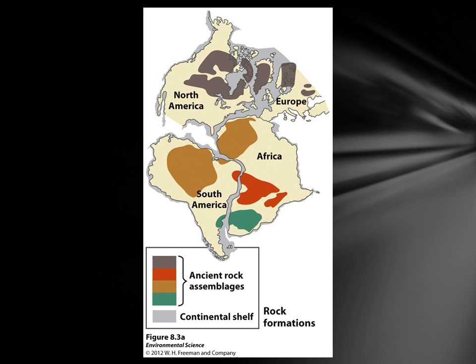A claim like that requires evidence. The first piece of evidence for continental drift is what we call geographic matching — in plain language, the continents look like they fit together like a puzzle. South America and Africa seem like they would fit nicely together. There's also evidence from rocks: rock formations on opposite sides of the oceans match in age, type, age structure, and similarity.